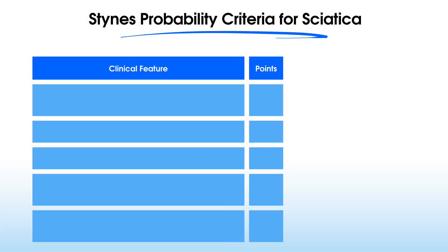When it comes to diagnosis, the Stein's probability criteria is brilliant at telling us the key clinical features that we expect patients with sciatica to present with. Each of these clinical features comes with a certain number of points, and when we add those points up, it helps us predict the probability for sciatica.